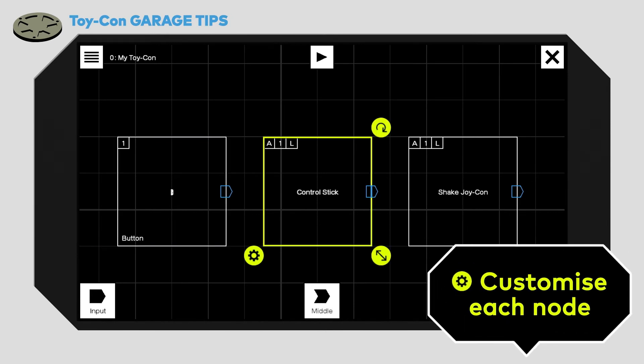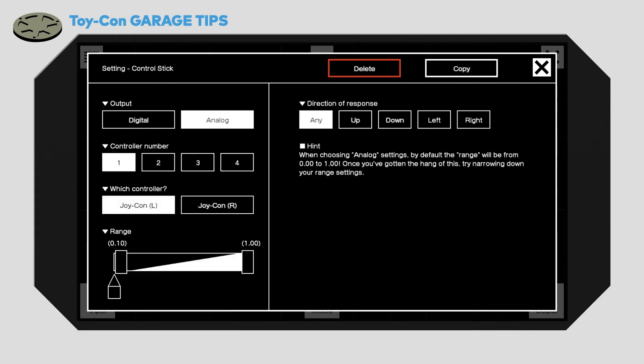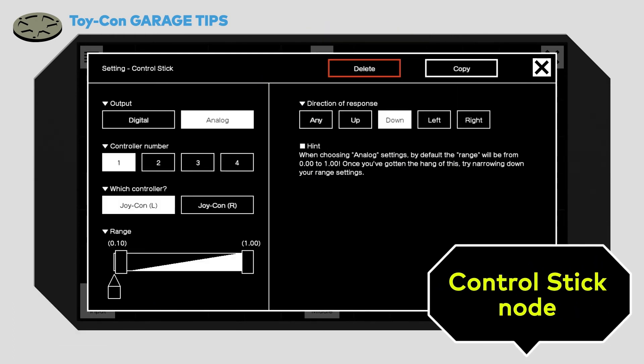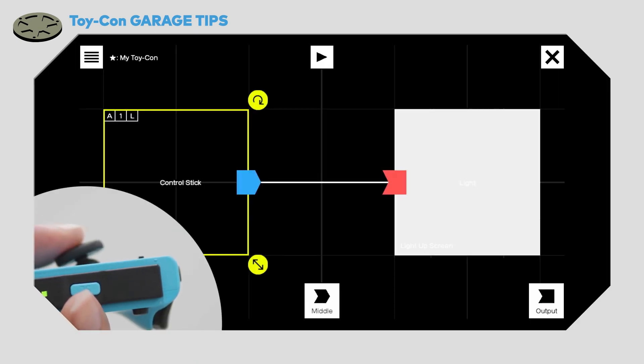There are lots of different types of nodes, and you can change the settings of each node too. The button node lets you select which buttons to use as your input, and the control stick node lets you choose which direction to push the stick to get a reaction.